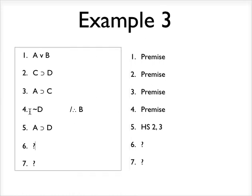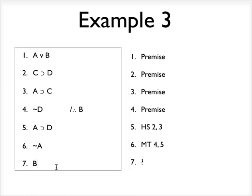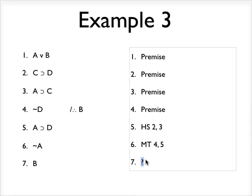Now, I'm going to do a modus tollens on lines 4 and 5 to get not A. Again, that was modus tollens on lines 4 and 5. And then finally, I'm going to derive B by disjunctive syllogism again.